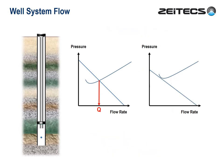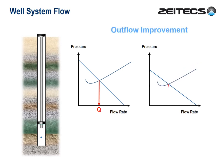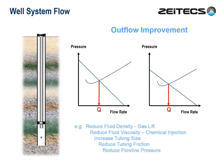Yet another way to achieve flow is to lower the outflow performance line. This is a little more complex — the shape of the line will actually change. But this is typically the effect of gas lift, which we'll come back to later, viscosity modifiers, and numerous physical so-called de-bottlenecking initiatives.